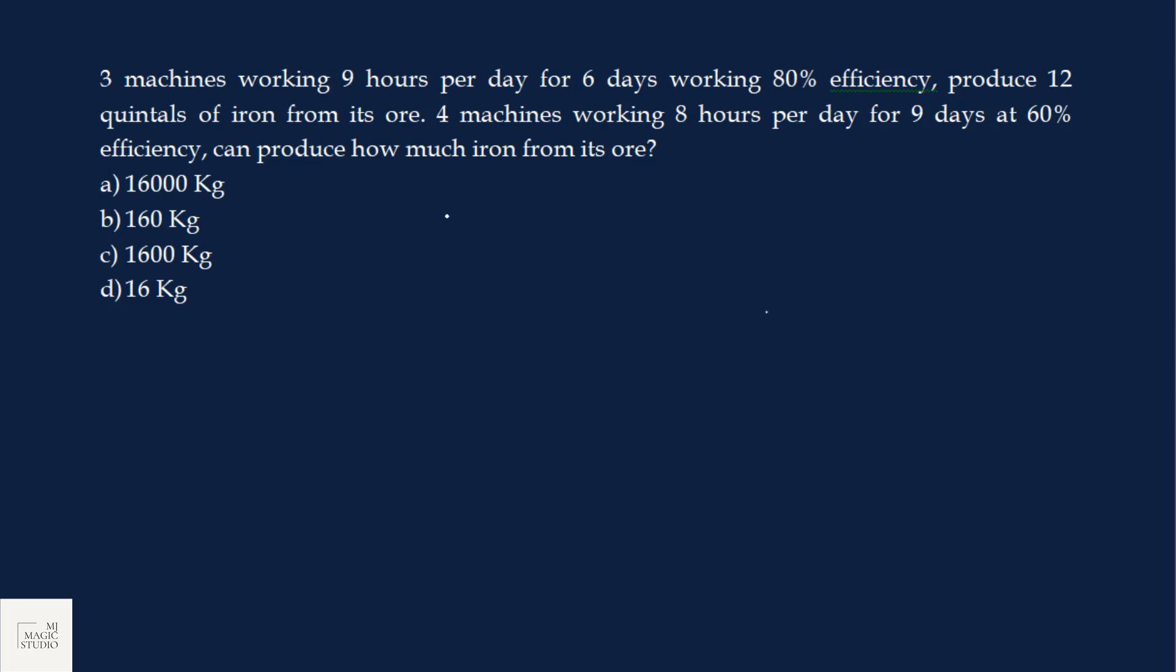3 machines working 9 hours per day for 6 days working at 80% efficiency produce 12 quintals of iron from its ore. 4 machines working 8 hours per day for 9 days at 60% capacity can produce how much iron from its ore? Go through rule 8, link is there in the description. CM rule, Masala formula says E1, M1, D1, H1 by W1 equals E2, M2, D2, H2 by W2.